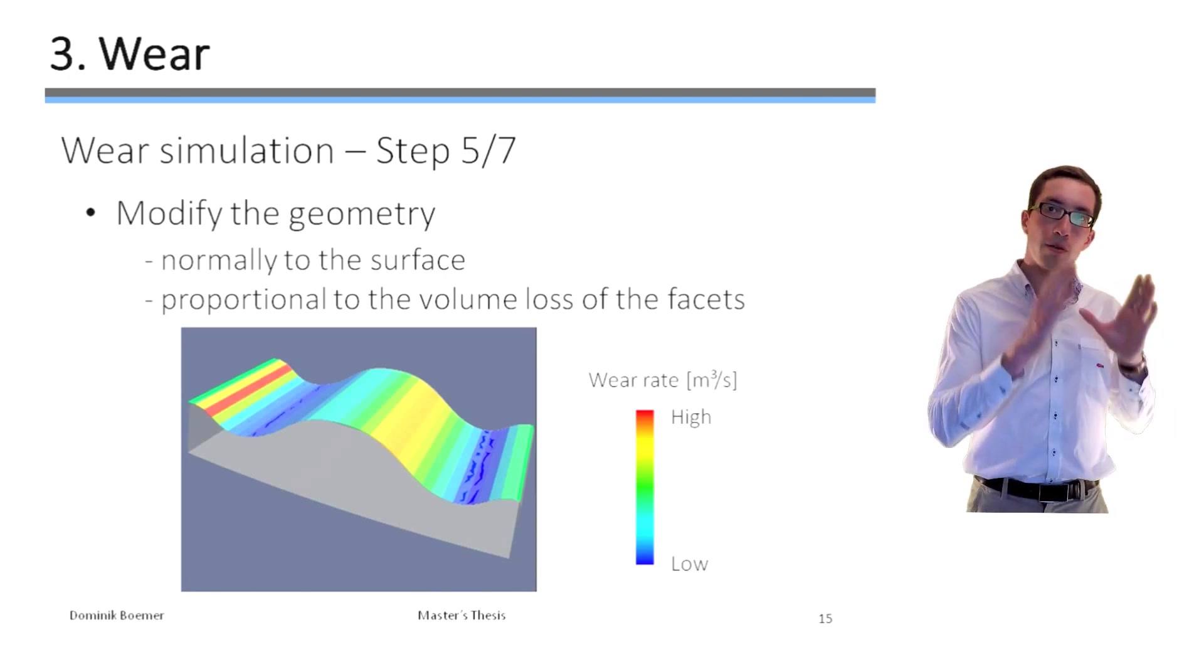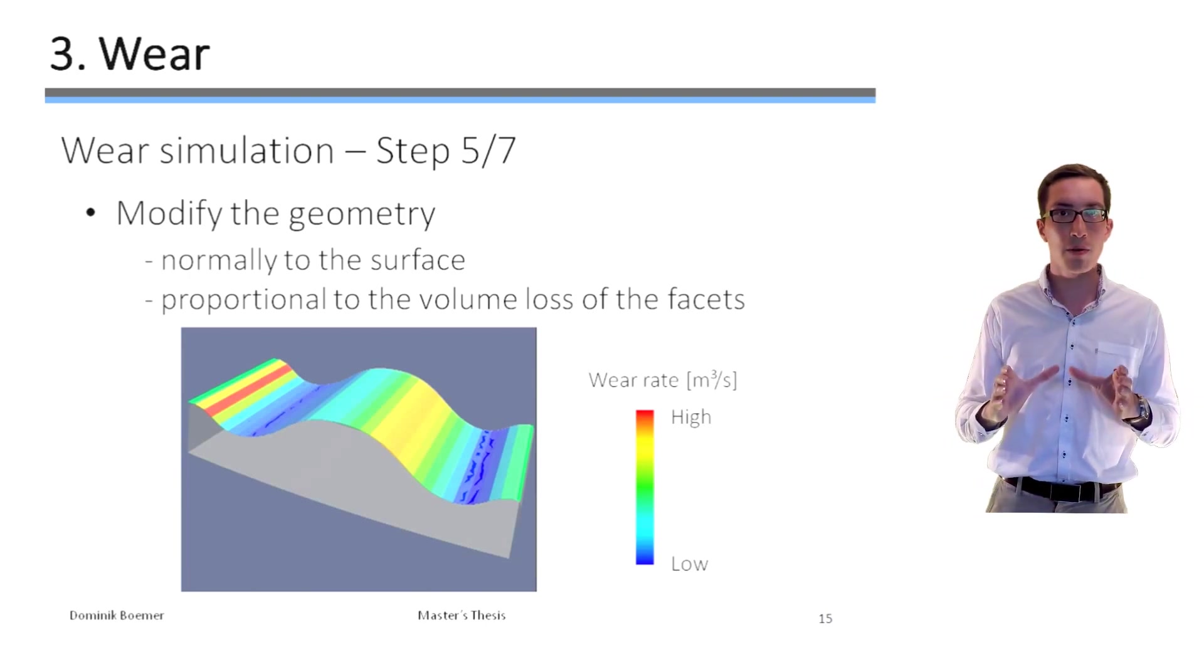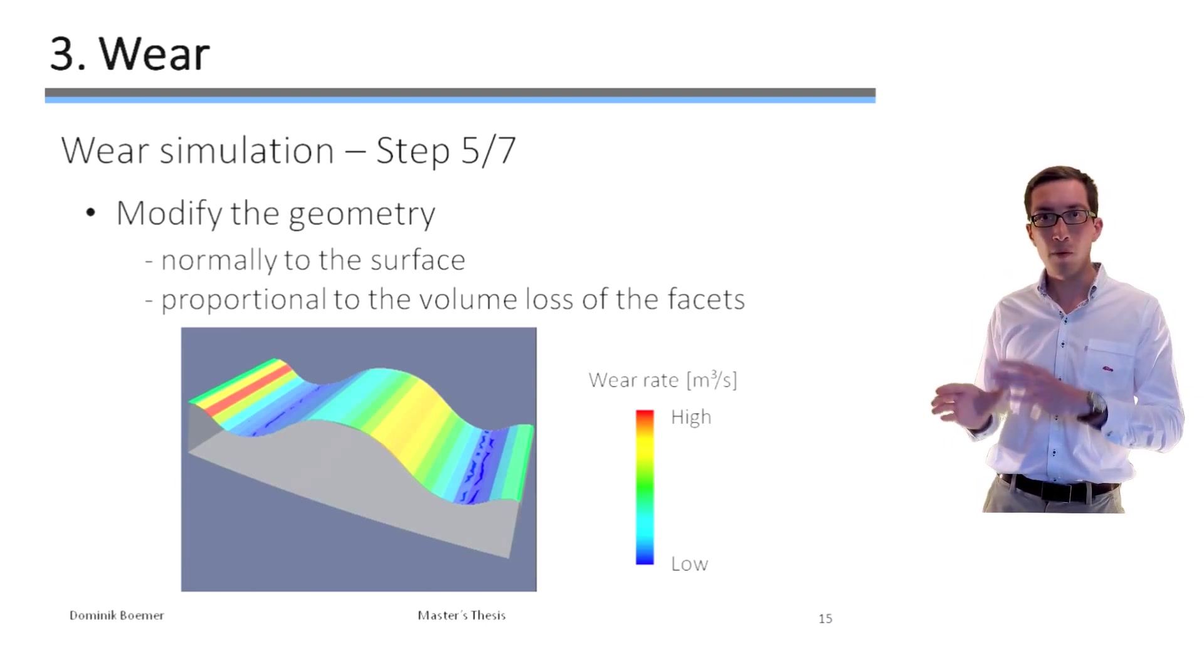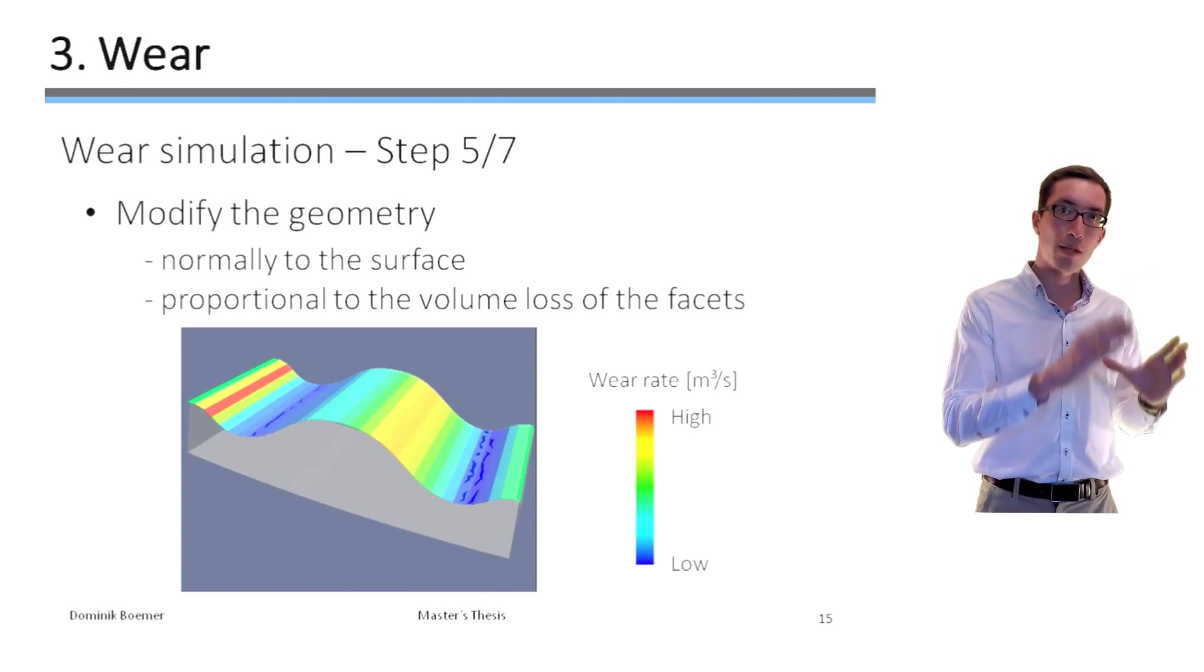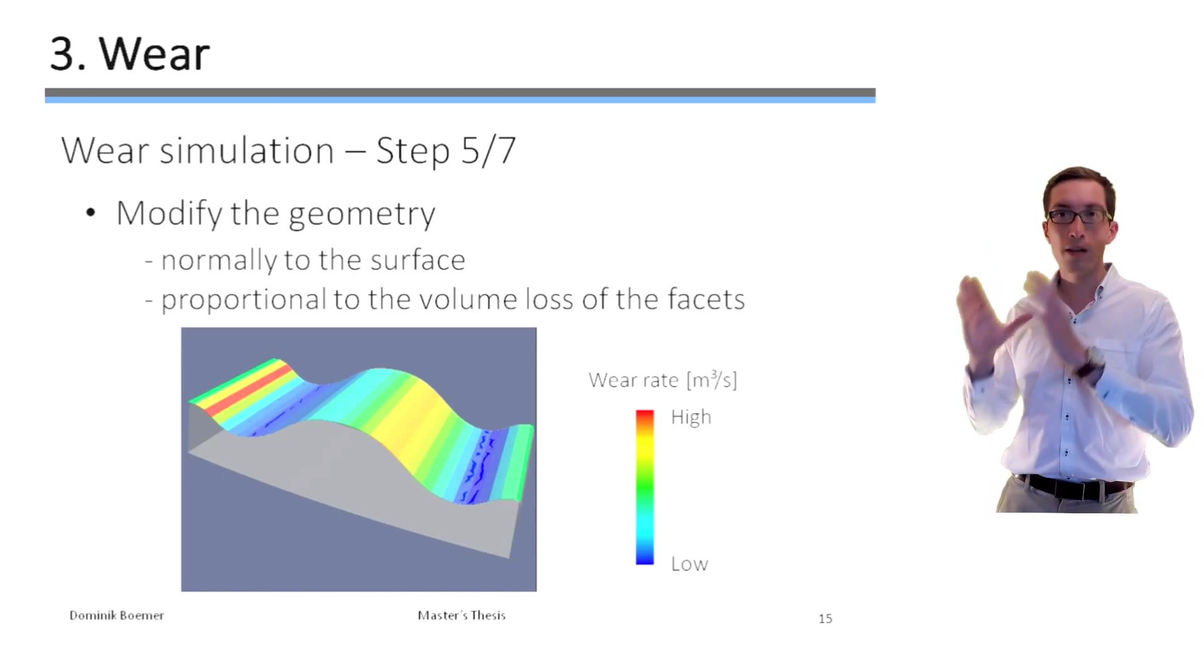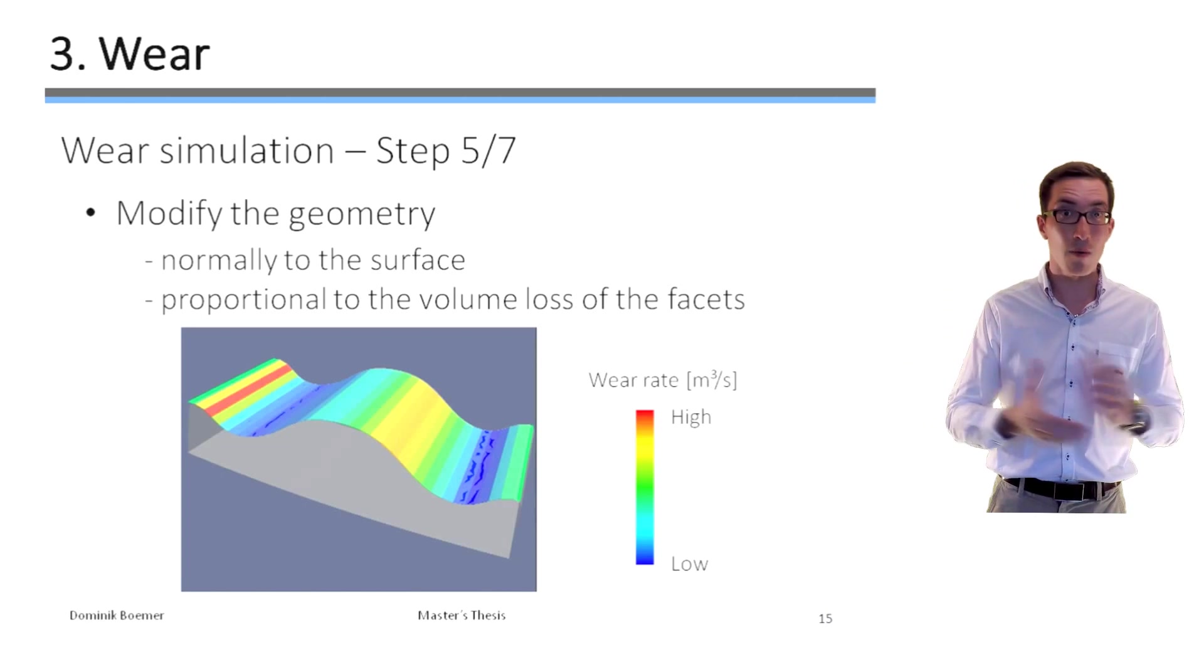So first the pseudo steady state has to be reached. Then the wear data has to be recorded and then the geometry has to be modified. Afterwards, the pseudo steady state has to be reached with the modified geometry. Then the wear data has to be accumulated with the updated geometry and finally the updated geometry has to be updated and so on.